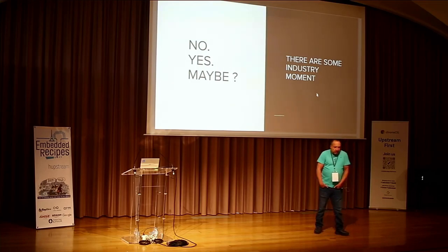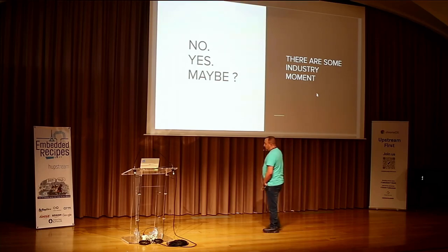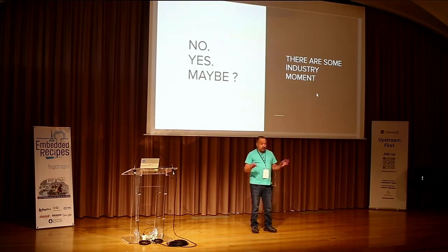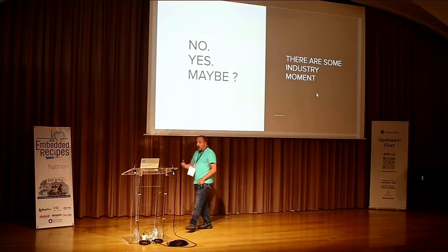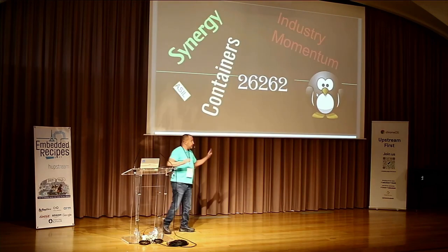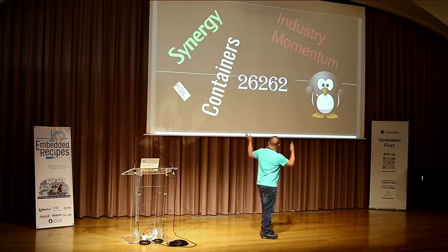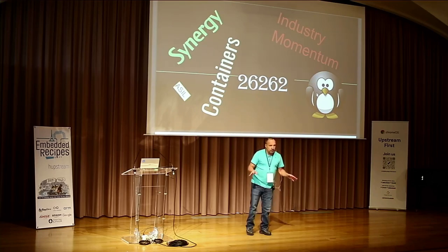Why? Everyone knows the obvious answer: Linux takes care of mostly everything. But it's still hard. First of all, the kernel itself is a multi-purpose kernel. The Linux kernel is not only a simple kernel dedicated for something — it was born that way. The kernel itself is really, really hard to think about making safety-qualified. Then you look for the buzzwords: synergy, industry moment, ISO 26262 — containers everywhere. This is the ISO for automotive.